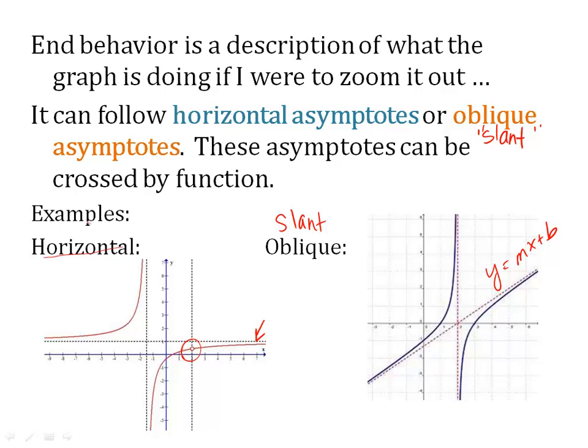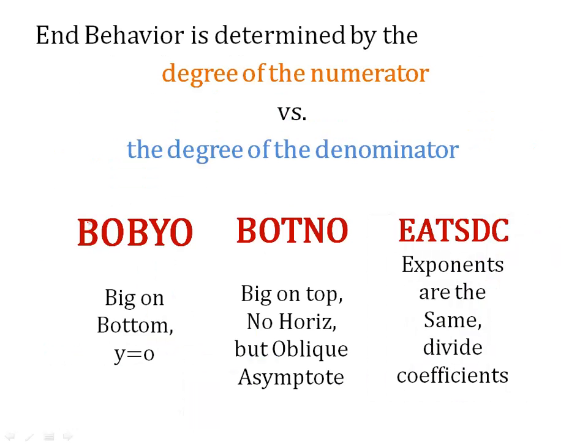So we're going to look at how to find that in the equation. So you figure out end behavior. It's determined by the degree of the numerator equation over the degree of the denominator equation. And there's a little acronym we use.